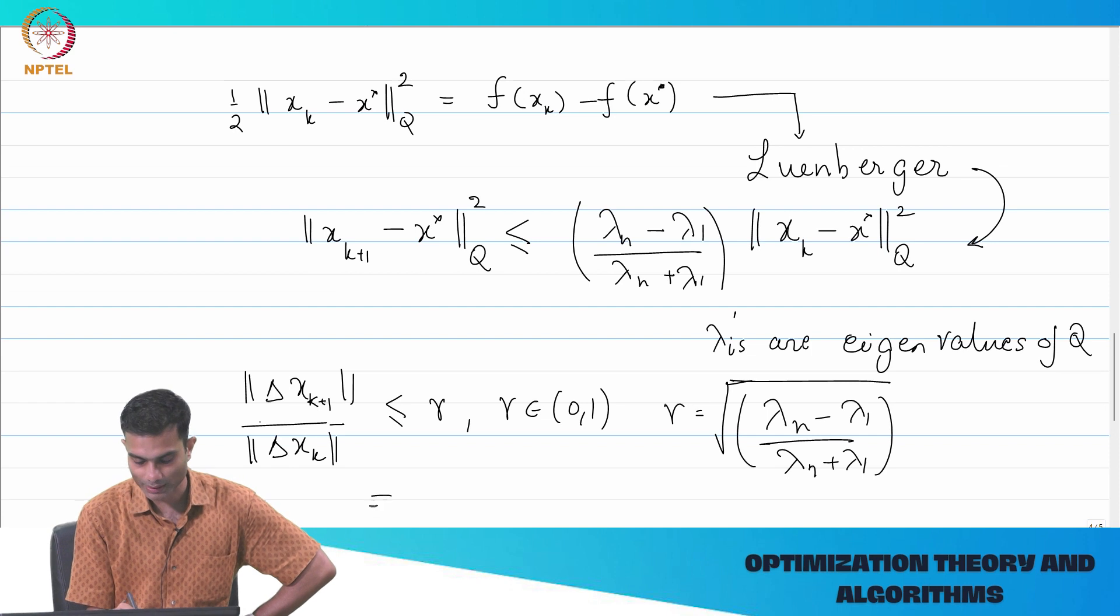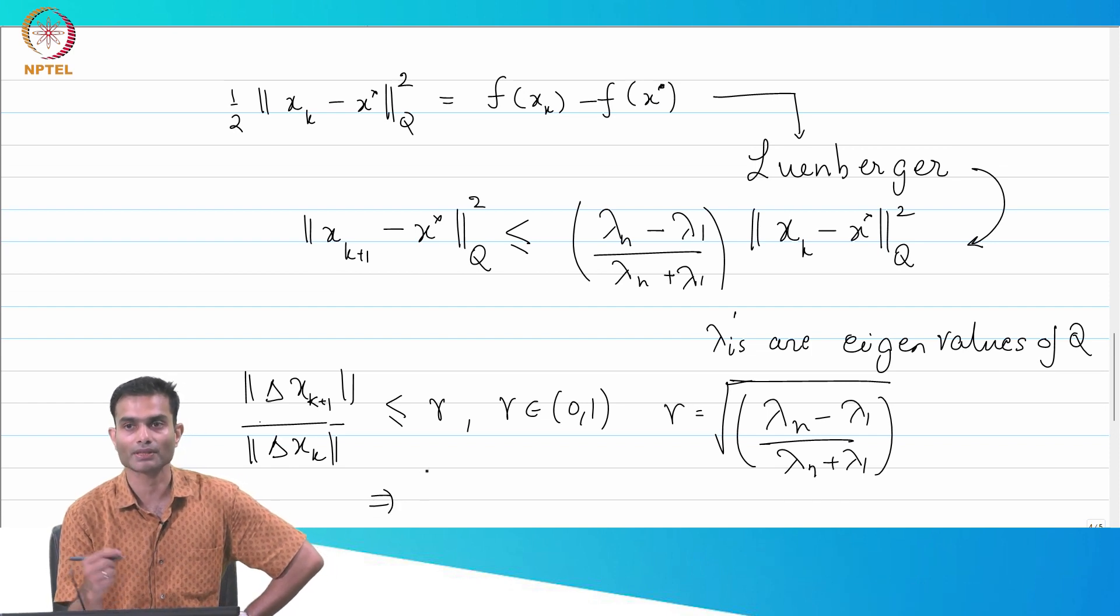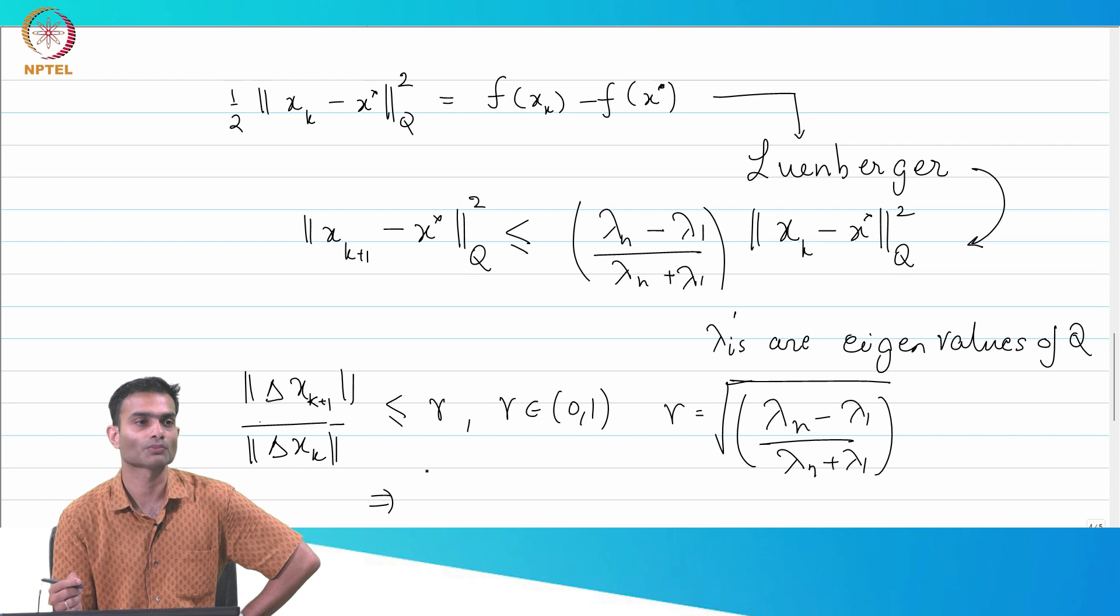So, this proves that convergence, we proved earlier that convergence happens and now we are saying that convergence is what, linear.